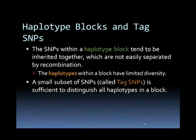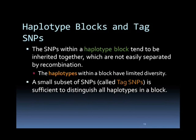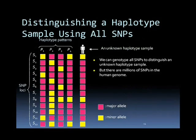Haplotype blocks and tag SNPs: The SNPs within a haplotype block tend to be inherited together and are not easily separated by recombination. The haplotypes within a block have limited diversity. A small subset of SNPs called tag SNPs is sufficient to distinguish all haplotypes in a block. An unknown haplotype sample can be added, and we can genotype all SNPs to distinguish it, but there are millions of SNPs in the human genome.